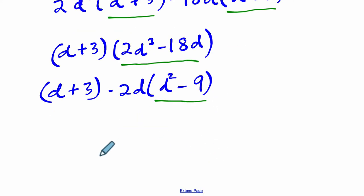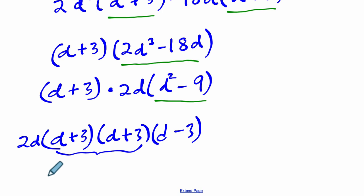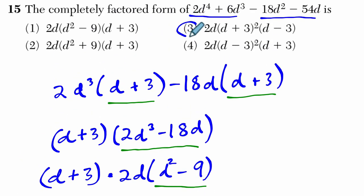So what this ends up equaling would be d plus 3 times, I'm going to put my 2d in front, times here, this is d plus 3 and d minus 3. These two right here, that's d plus 3 squared. So we have 2d times d plus 3 squared times d minus 3. And that is choice 3.